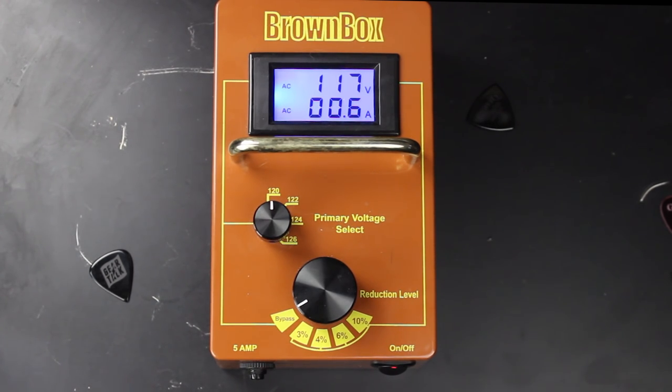When you click it on, it'll tell you what your wall's sending you, and then when you plug the amp into it and turn that on, it'll tell you where it needs to be. Right now it's bypassed, but we're going to reduce the voltage. It's going to start out way down, 10% reduction, and work our way up to 3%. So bypassed.